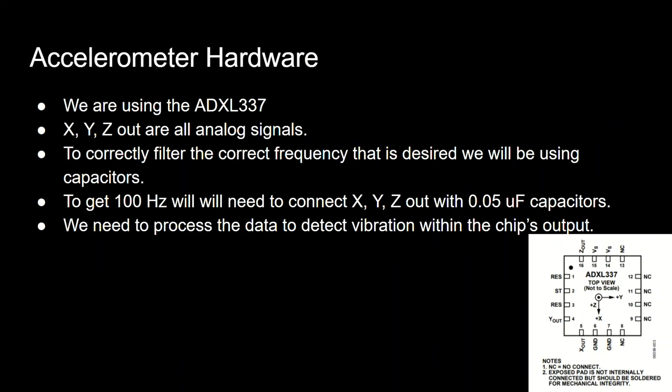Accelerometer hardware: we are using the ADXL337. The XYZ outputs are all analog signals. To correctly filter the desired frequency, we will be using capacitors. To get 100 Hz, we will need to connect the XYZ outputs with 0.05 microfarad capacitors. We need to process the data to detect vibration within the chip's output.